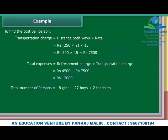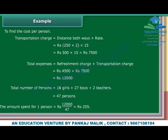Total number of persons equals 18 girls plus 27 boys plus 2 teachers, which is equal to 47 persons. The amount spent per person equals Rs. 12,000 upon 47, which is equal to Rs. 255.